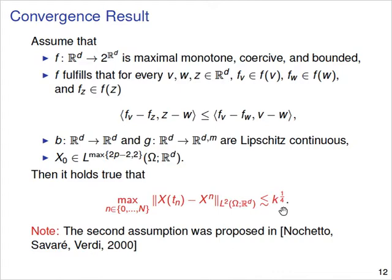Let me show you the idea of the proof. To make things simpler, let's not look at the general setting but make some simplifications. The term b is Lipschitz continuous and very regular, so it doesn't contain the main difficulty — we drop b completely. And g was the diffusion coefficient with multiplicative noise, but to see the main idea of the proof, let's say g is constant, giving us an easier type of noise to consider. The additional technical details needed to include more general functions follow the same main idea.